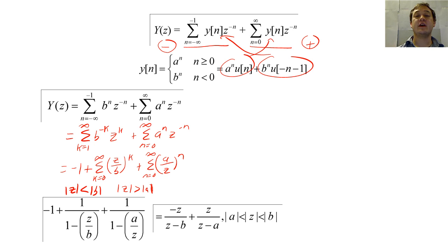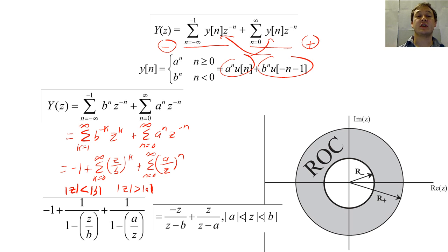Based on this equation, we find that the ROC will look like a ring. The inner ring is determined by the value of A, and the outer ring is determined by the value of B.